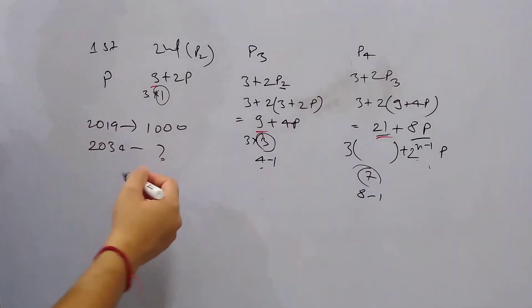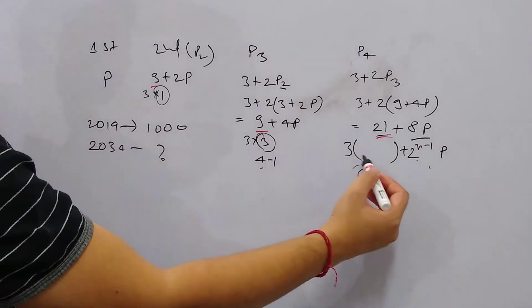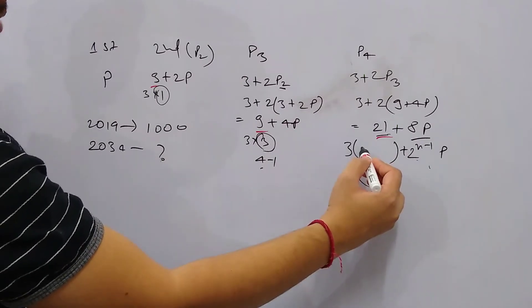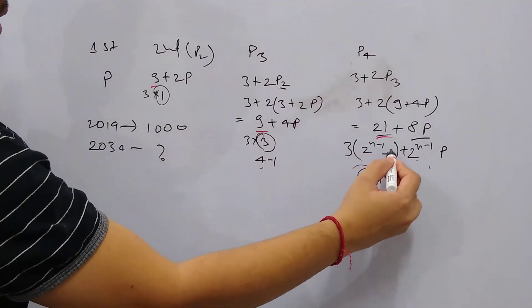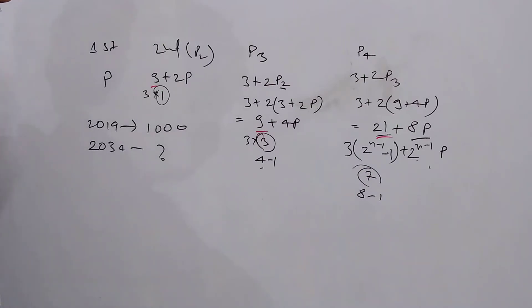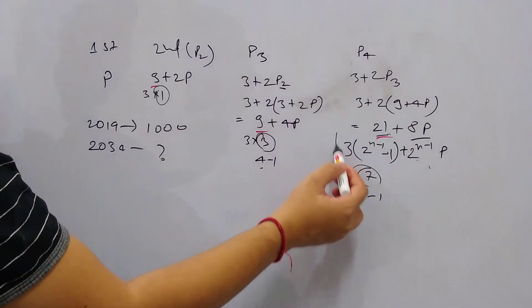So now this is clear that here if we take 3 as a factor, then it becomes 2 to the power 0 minus 1. So this is the pattern we were looking for.